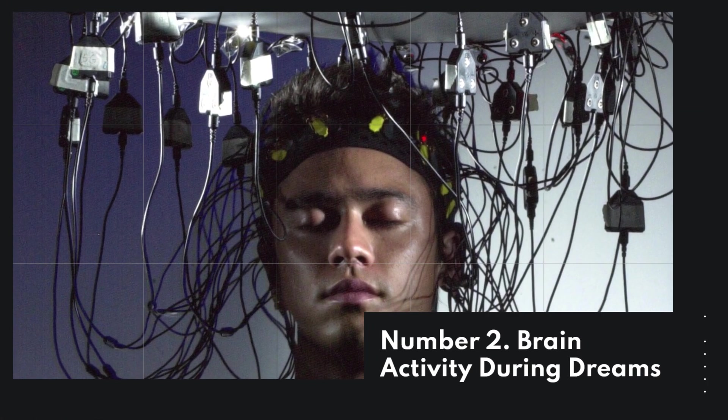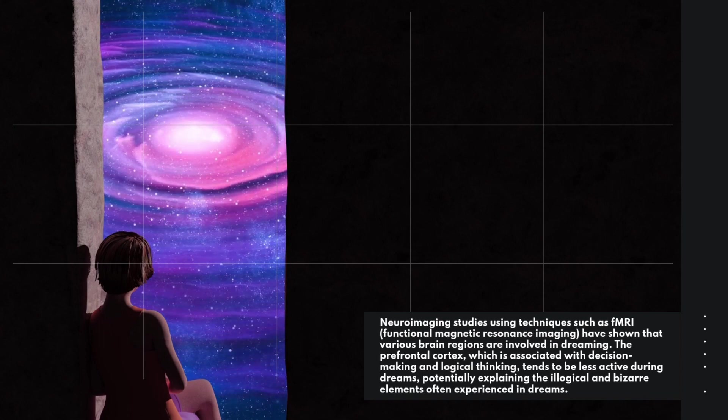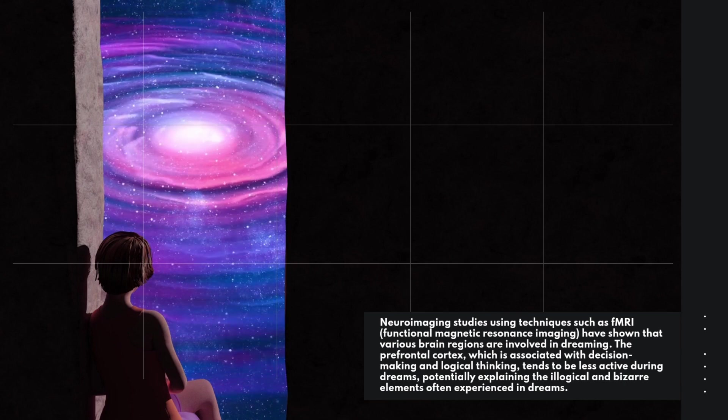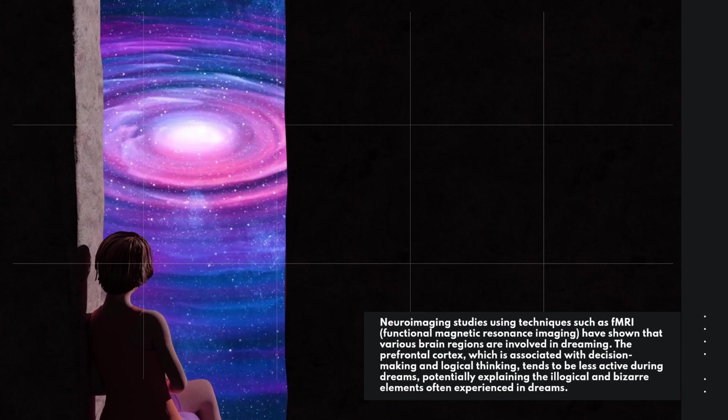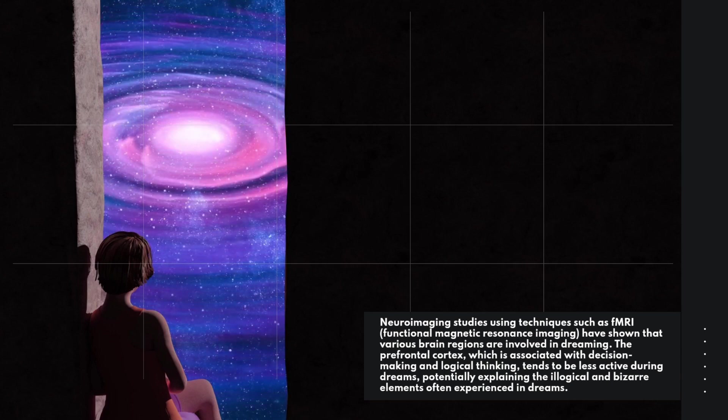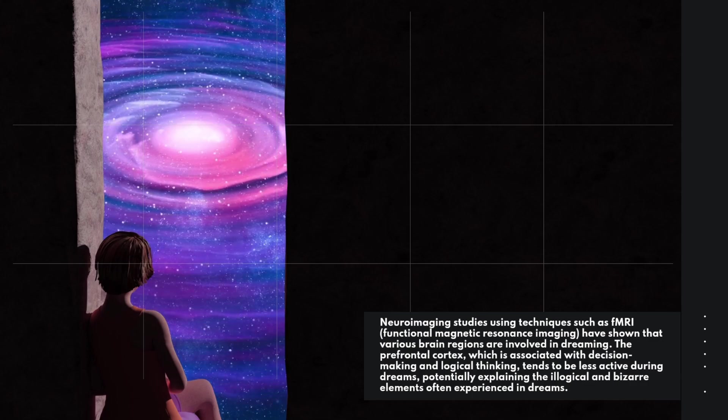Number 2: Brain Activity During Dreams. Neuroimaging studies using techniques such as fMRI (functional magnetic resonance imaging) have shown that various brain regions are involved in dreaming. The prefrontal cortex, which is associated with decision-making and logical thinking, tends to be less active during dreams, potentially explaining the illogical and bizarre elements often experienced in dreams.